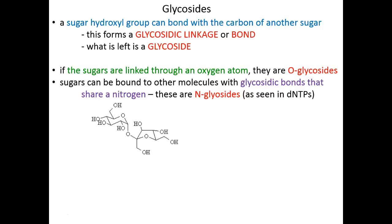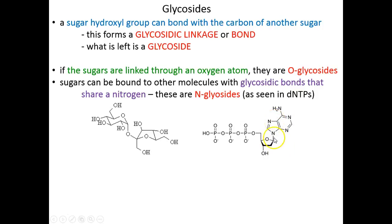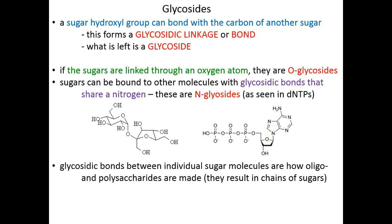We can also make N-glycosides where it's a nitrogen serving as the bridge — two sugars bound to one another through a nitrogen, or one sugar bound to anything through a nitrogen. We've already discussed this example: this is an N-glycoside — a ribose sugar in a nucleotide, where we have our three phosphates, our ribose sugar, and our nitrogenous base linked on there as well. This is a glycosidic bond just as we've defined it, but now we can be more specific and say it's an N-glycoside because the glycosidic bond is occurring through a nitrogen.